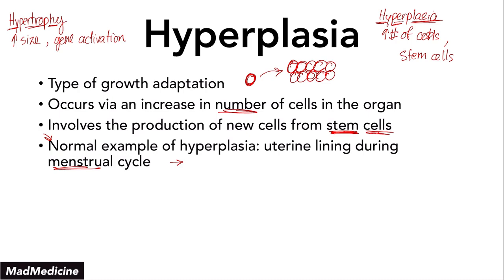During the menstrual cycle, the uterine lining actually grows — it increases during the cycle and then when menses occurs, it goes through atrophy and the uterine lining dies off, which is when a female has their period. This process happens because of hyperplasia: you have stem cells in your uterine lining in the basal layer, and that allows the cells of the uterine lining to grow and undergo hyperplasia. That is a normal, physiologic example.